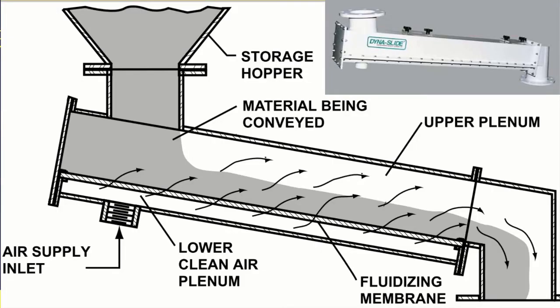The air slide conveyor is a tool used to transport fine material products from the grinding of raw materials. This tool consists of two chambers: the material chamber and the air chamber. The material can flow due to the slope and the air push from the air chamber, so that the material floats and flows.